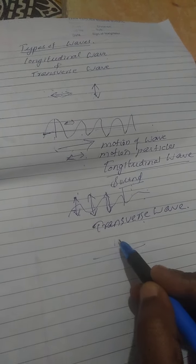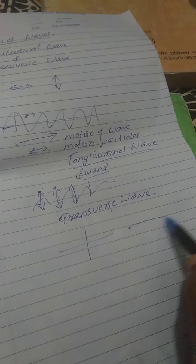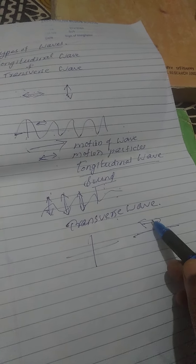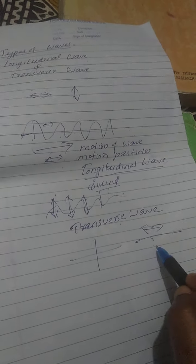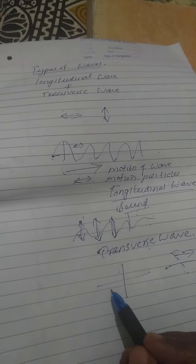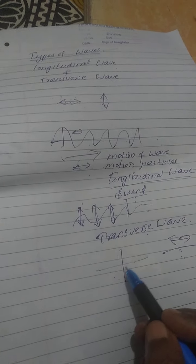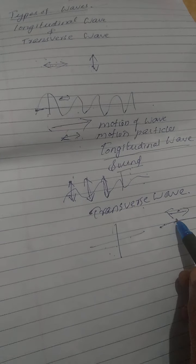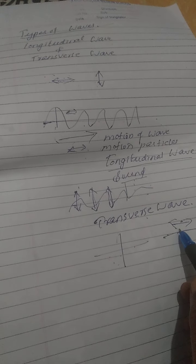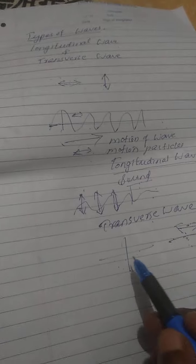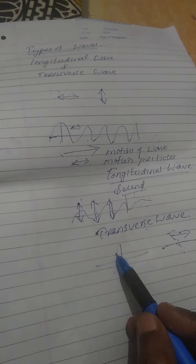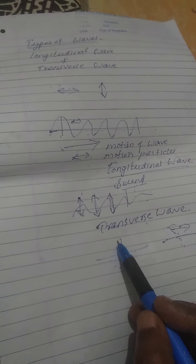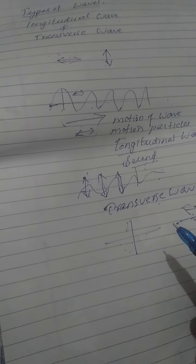In transverse waves, the wave is moving from left to right, or in the forward direction, but the particles present in the medium move in the upward and downward direction — that is perpendicular. In longitudinal waves, the particles move parallel to the direction of propagation of the wave, but here the movement of the particle is at right angles to the movement of the wave.